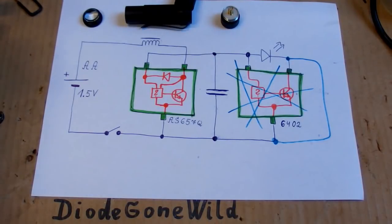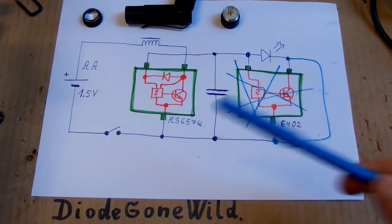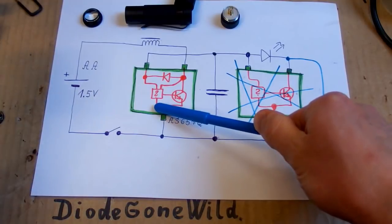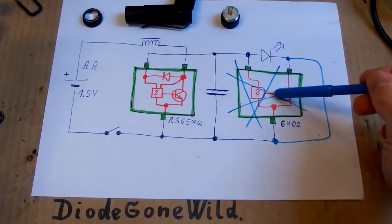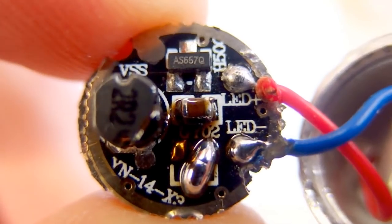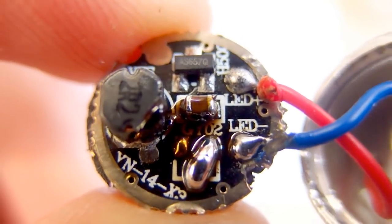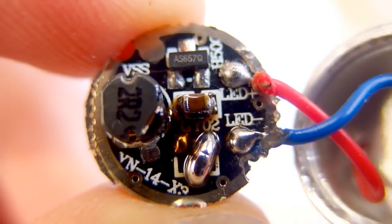If the current remains the same, it means that the current regulation is in this chip. And if the current will be much higher, then it means that the current regulation is or was in this chip. Okay, so now the chip is replaced with just a blob of solder and let's test it.